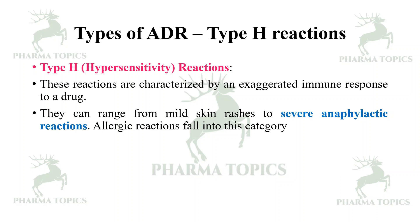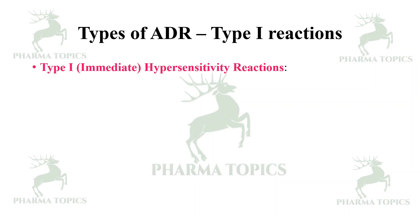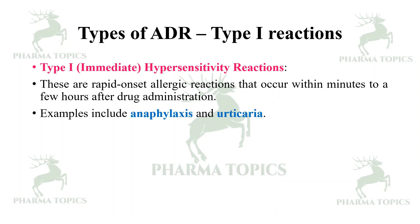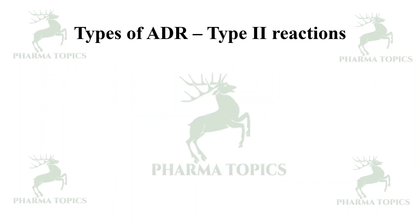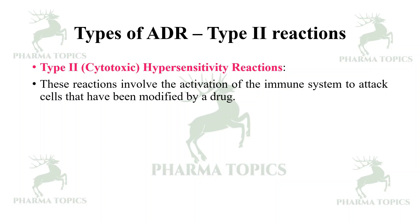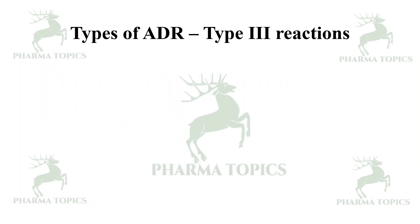There are also other classification types. Type 1 reactions are immediate hypersensitivity reactions — rapid onset allergic reactions that occur within minutes to a few hours after drug administration. Examples include anaphylaxis and urticaria, such as with penicillin allergy. Type 2 reactions are cytotoxic hypersensitivity reactions, involving activation of the immune system to attack cells that have been modified by a drug. An example is hemolytic anemia caused by certain medications.